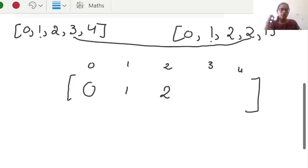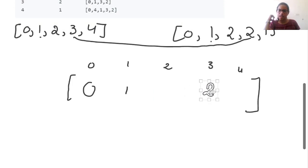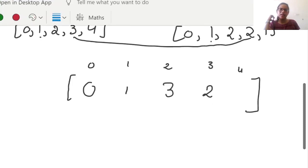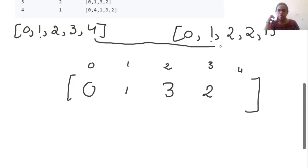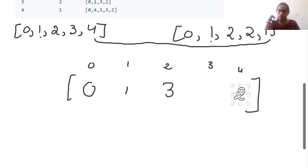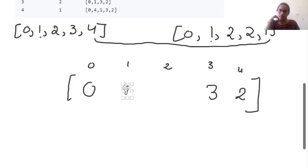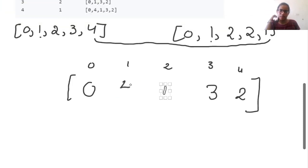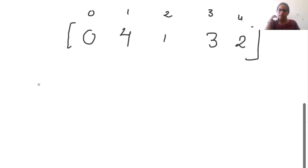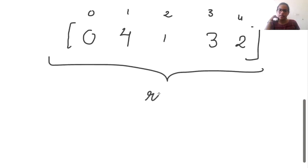When 3 is inserted at index 2, the existing value 2 gets shifted. So 2 is shifted and 3 is inserted at index 2. Similarly for 4, it should be inserted at index 1, so we need to shift elements 1, 3, and 2 one place to the right, and insert 4 at index 1. So the final target array is 0, 4, 1, 3, 2, and we need to return this.